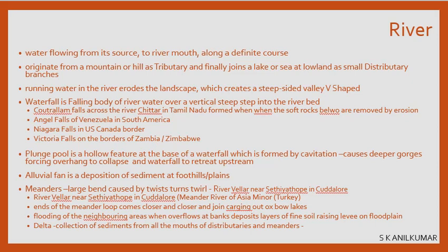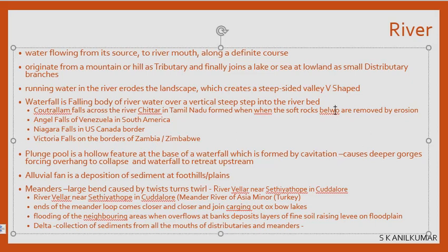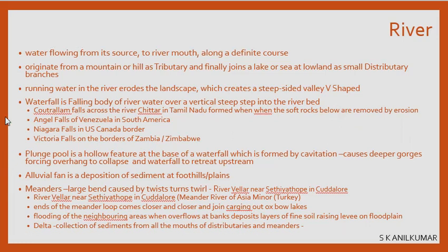A waterfall is a river falling from the end of a mountain or hill in a vertical, steep drop. If the water flows slowly down a slope, it is not a waterfall; it must fall on a vertical steep step to be called one. Examples include Kutralam Falls and Jog Falls near Bangalore. Waterfalls are important places of tourist attraction with many benefits, and many people are drawn to them.